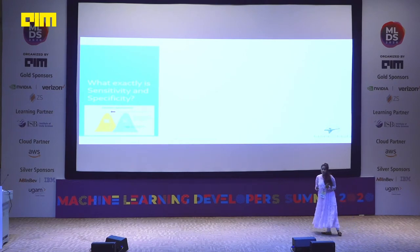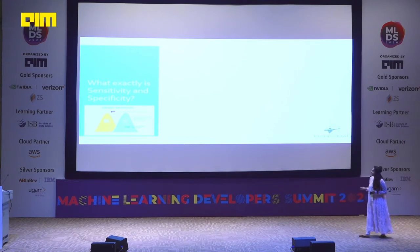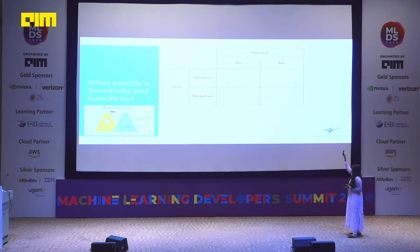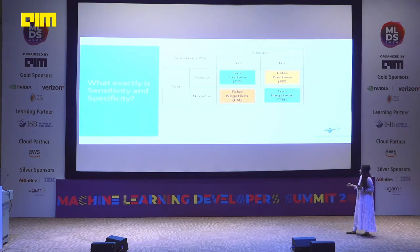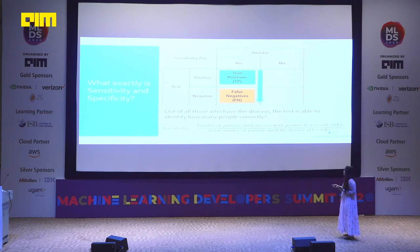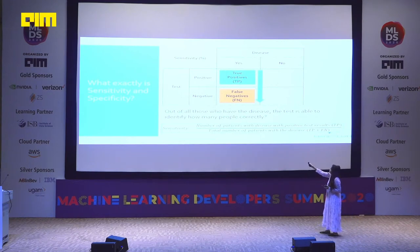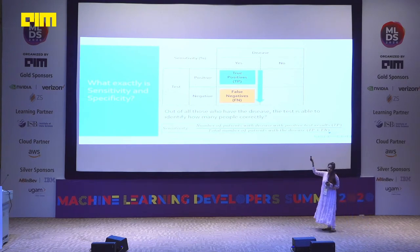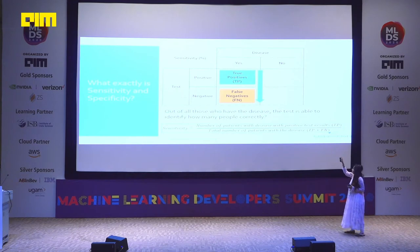We judge the performance of our protocol on the basis of sensitivity, specificity, positive prediction value, and negative prediction value. Taking an example where a patient has the disease or doesn't, and the test is positive or negative — sensitivity is the proportion of people who have the disease with a positive test: number of patients with disease with positive test results divided by total number of patients with the disease. If true positive is 90 and false negative is 10, the sensitivity is 90%.